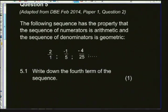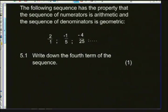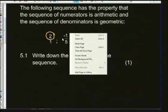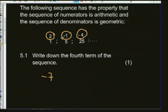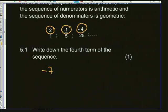For 5.1, write down the fourth term of the sequence. The numerators are arithmetic: 2, −1, −4 — we subtract 3 each time. So the fourth numerator is −4 − 3 = −7. The denominators are geometric: multiplying 25 by 5 gives 125. So the fourth term is −7/125. One easy mark.